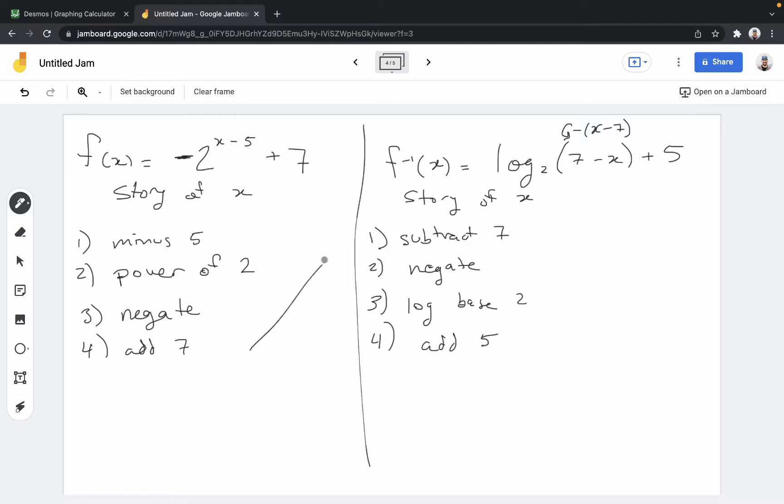So if we start at the bottom of the list and undo each of those, we're going to reduce 7. Negating is the same whether we're going forward or backwards. So you can see here it's reduced by 7 and negated. That can be distributed and changed. The next thing we do is we undo the power of 2. That's going to be a log base 2. And then we add 5, kind of undoing the minus 5.